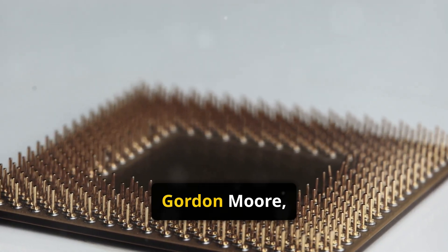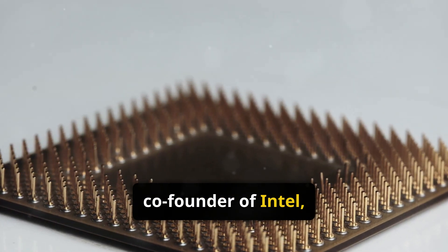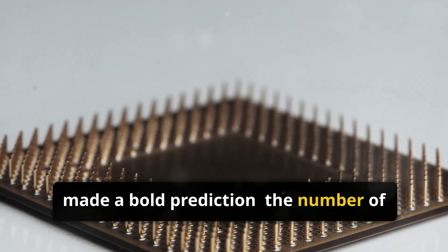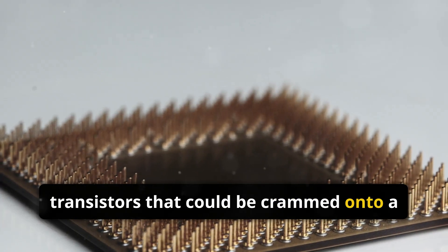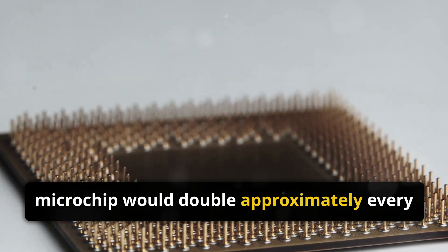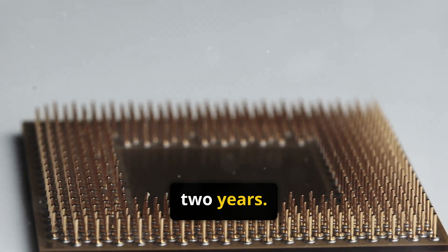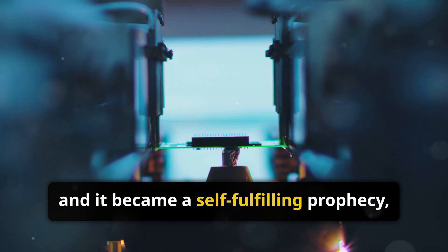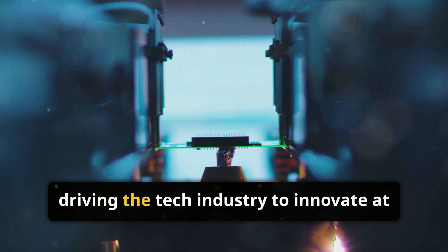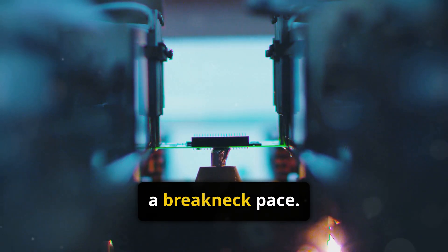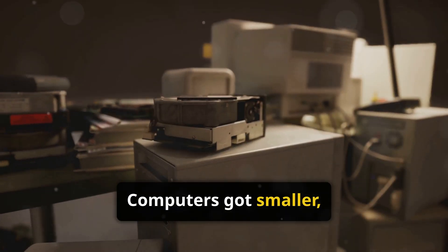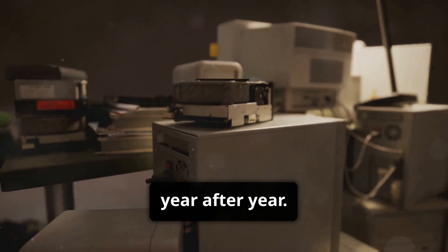In 1965, Gordon Moore, co-founder of Intel, made a bold prediction. The number of transistors that could be crammed onto a microchip would double approximately every two years. This became known as Moore's Law, and it became a self-fulfilling prophecy, driving the tech industry to innovate at a breakneck pace. Computers got smaller, faster, and cheaper year after year.